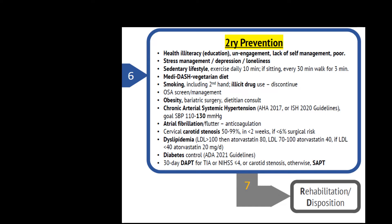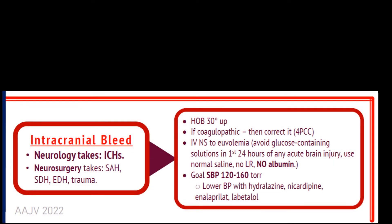For secondary stroke prevention, identifying modifiable risk factors is important. These include chronic arterial systemic hypertension (long-term systolic BP goal 110–130), atrial fibrillation, smoking, sedentary lifestyle, sleep apnea, dyslipidemia, diabetes mellitus, illicit drug use, and poorly managed stress. In cases of TIA or acute stroke with NIH Stroke Score of 4 or less, if initiated within 48 hours from symptom onset, dual antiplatelet therapy is indicated for three weeks to three months, after which continue a single antiplatelet agent. Initiate statin therapy irrespective of the cholesterol level unless there is a contraindication. Any treatment or step not done needs to be documented with rationale.